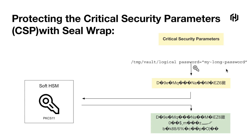Without getting too much into details, in our demo we're going to see how vault encrypts a static secret. We'll create a key-value secret engine with two different paths. One path we'll define as without using seal wrap, where we'll store the password as 'my long password'. Another path that we'll define in this secret engine, we'll mark as seal wrap, where we'll also store the same password as 'my long password'.